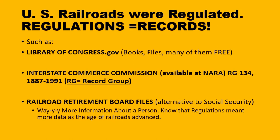You can look at the Interstate Commerce Commission archives available at NARA, and they're going to tell you some things about railroad wrecks. You can look at Railroad Retirement Board files — that's the alternative to Social Security for people who were working for the railroad. A lot of the information I've seen so far is after 1936. Occasionally there's other information, but don't expect that information extends backward from 1936. However, it's got a lot of information about a person, and they just kept collecting more things all the time.